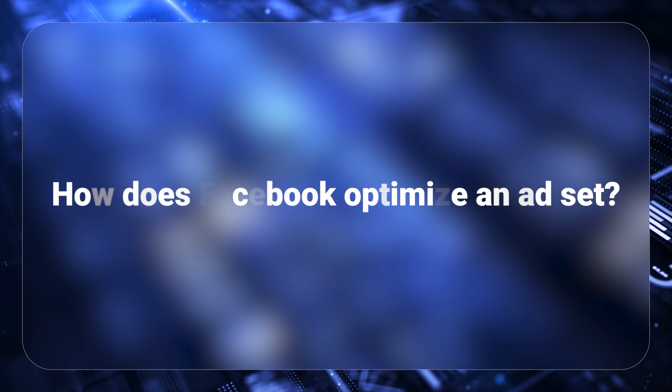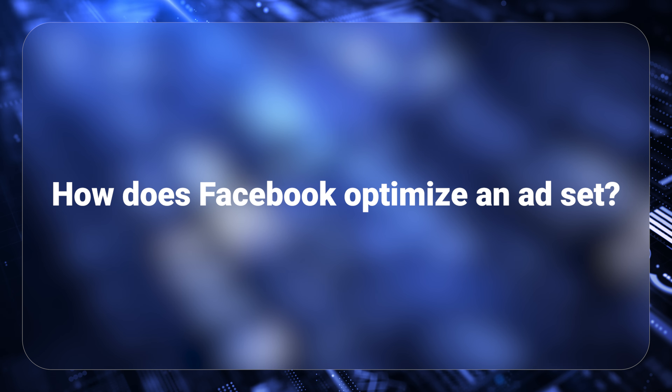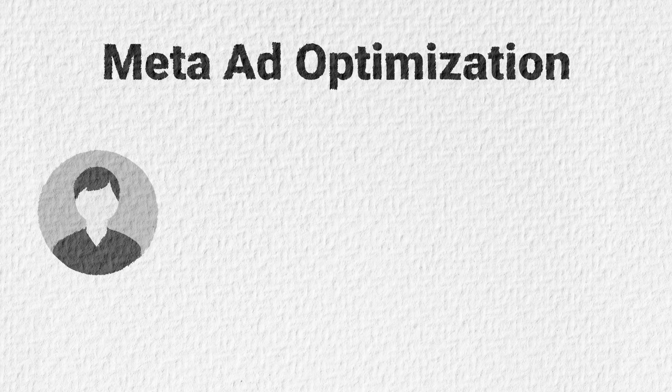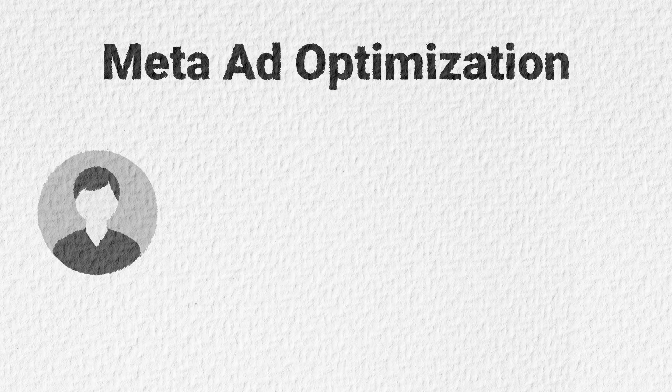We're going to talk about how Facebook is actually optimizing one ad set. So let's say for example that you're having one ad set which is optimizing for a purchase event. Then Facebook is going to try to find someone — let's call him Kostantinos — who is going to buy.